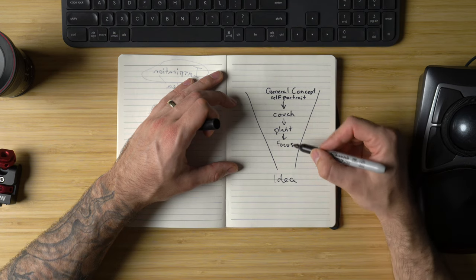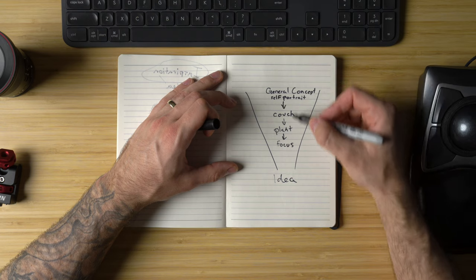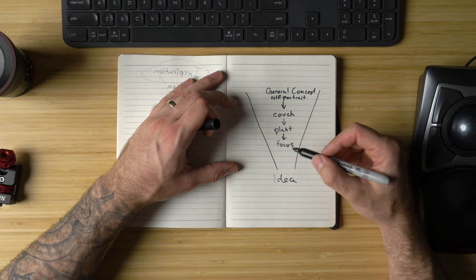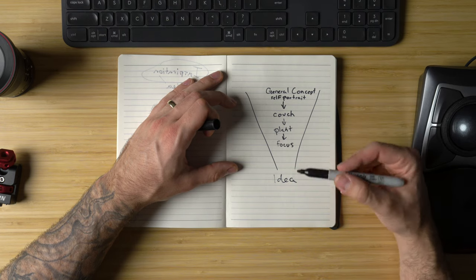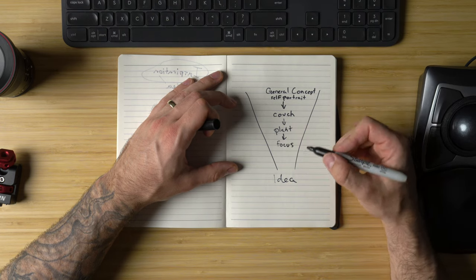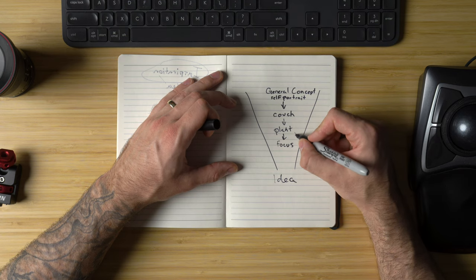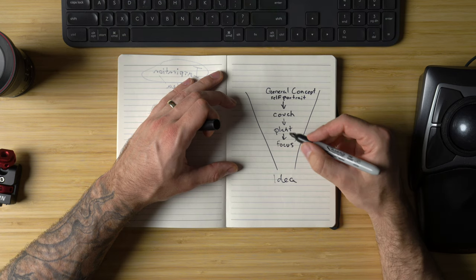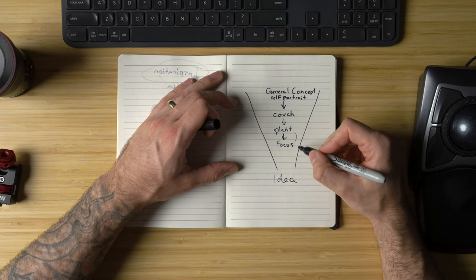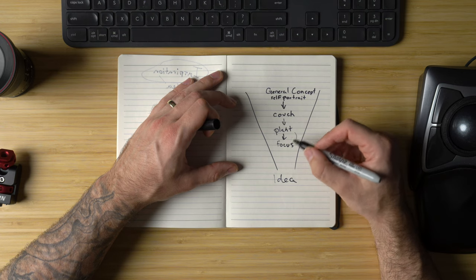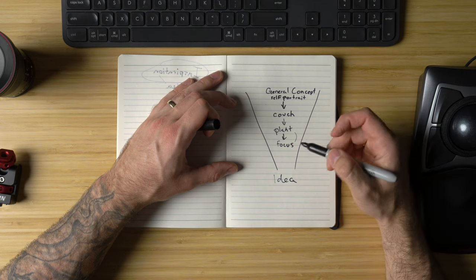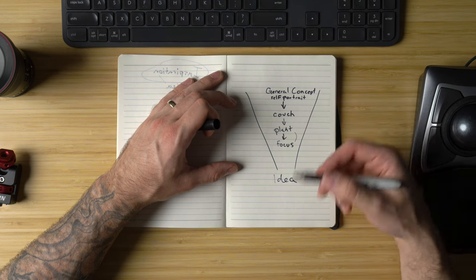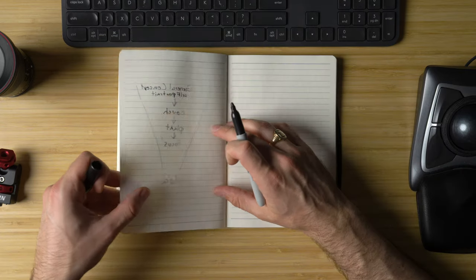Now we've got a pretty solid idea: a self-portrait on the couch with the plant in focus while I'm out of focus in the background. We went from a super general concept and just little by little added things until we've got our full idea. Somewhere during the funnel I started to get excited about this concept — I started to get inspired. All of a sudden I'm inspired again.